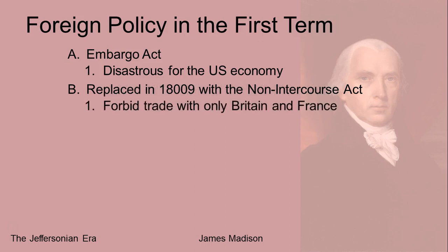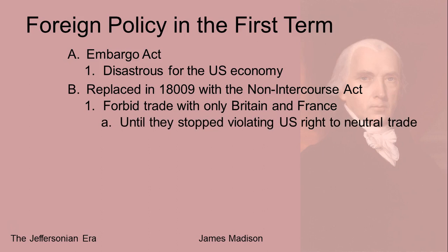The problem with the Non-Intercourse Act is that Britain and France together still made up so much of U.S. trade — something like 80%. The deal was that the U.S. wouldn't trade with them until they stopped violating American rights — stopping American ships and seizing American crews. But after two years, it still wasn't working. The economy wasn't moving again. So Congress drafted something called Macon's Bill No. 2 as a way of trying to save face and get out of the disastrous embargo idea, while at the same time convincing Britain and France to respect American rights as a neutral country.